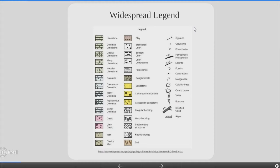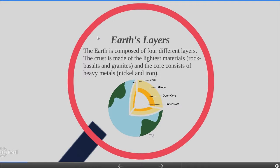A map legend is a table or chart included on a map to indicate the meaning of the map's varied symbols. This can also be called the map's key. In structural geology, when we plot the cross-section, we use these widespread legends to show from what rocks our layer consists of.